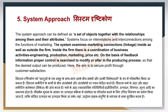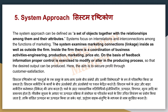Next is the system approach. This approach defines a set of objects together with the relationships among them and their attributes. You focus on marketing functions as interrelated and interconnected. You study and examine marketing connections within your firm and outside — how to coordinate business activities like engineering, production, marketing, and pricing. There is proper feedback so they have information on how to control and make changes in their processes to see desired output, profit, and satisfaction.